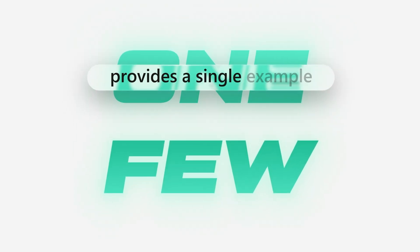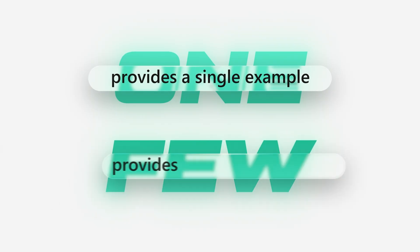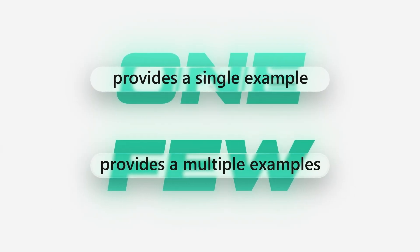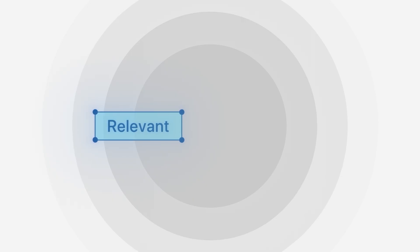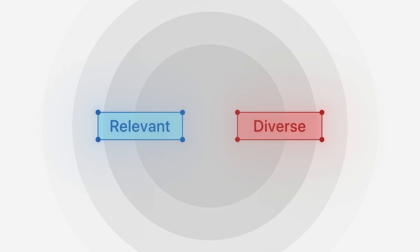A one-shot prompt provides a single example, whereas a few-shot prompt provides multiple examples to the model. They mentioned that you should use at least three to five examples for few-shot prompting. You may need more for complex tasks, or fewer due to input length limitations. Anthropic states that examples must be relevant — mirroring your use case exactly — as well as diverse, covering edge cases and all potential challenges, varied enough to cover the range of expected outputs.